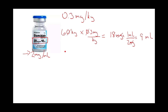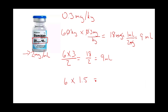The same calculation, faster: take the 60 kilogram patient, drop the zero to get 6, multiply 6 times 3 divided by 2 — 18 divided by 2 equals 9 milliliters. Even simpler: take that 60 kilogram patient, drop the zero to get 6, and multiply 6 times 1.5 — that's 6 plus half of itself — which also equals 9 milliliters.